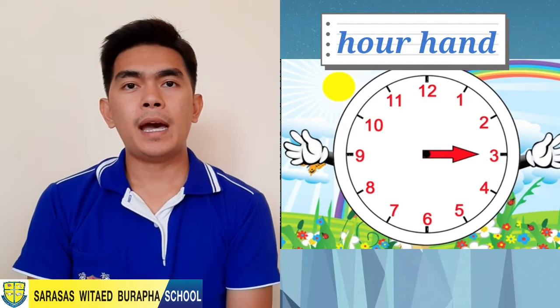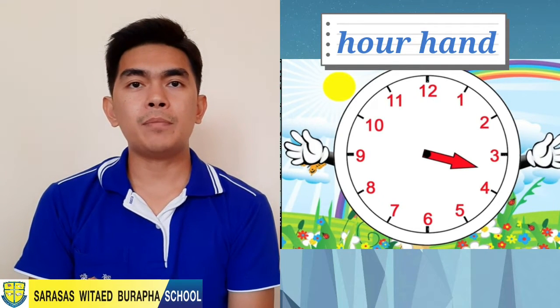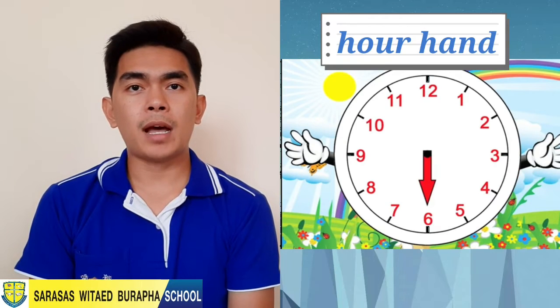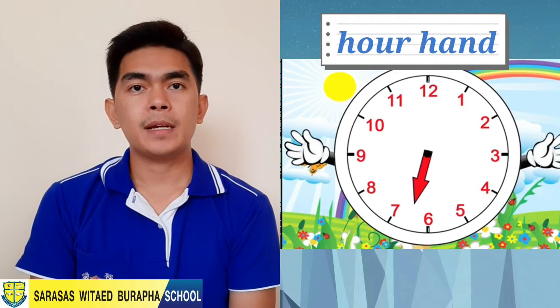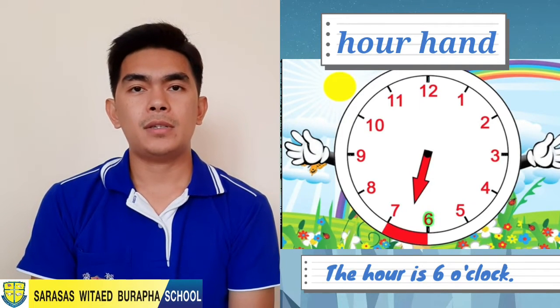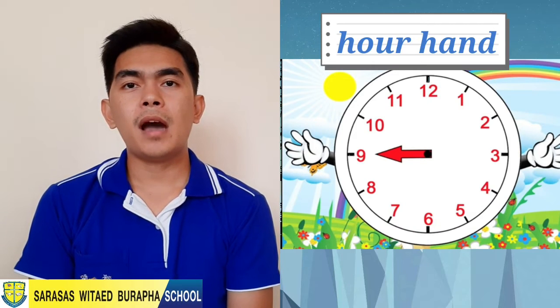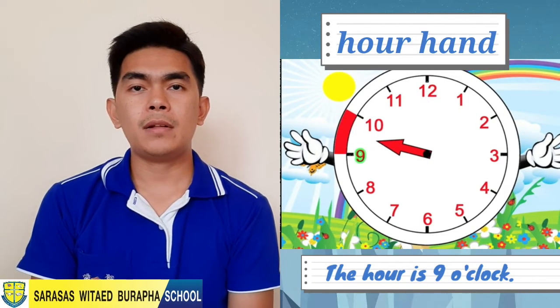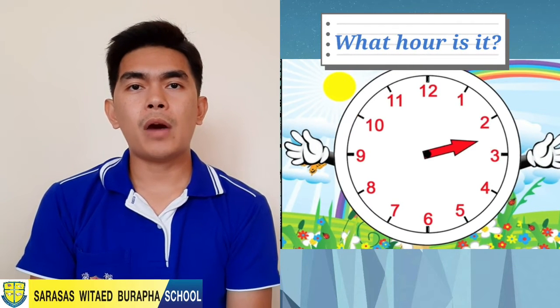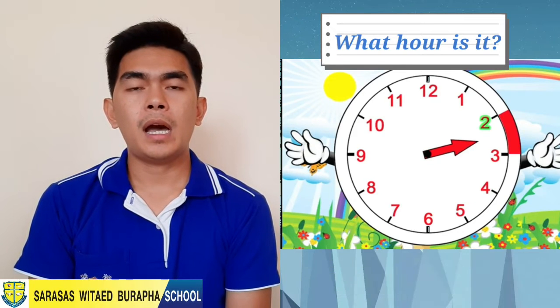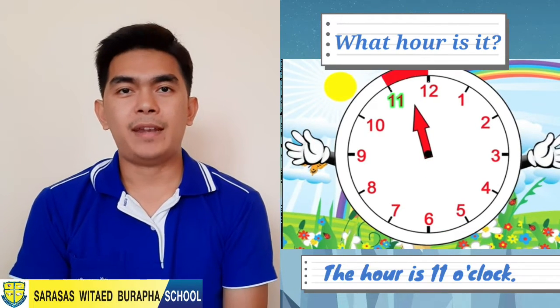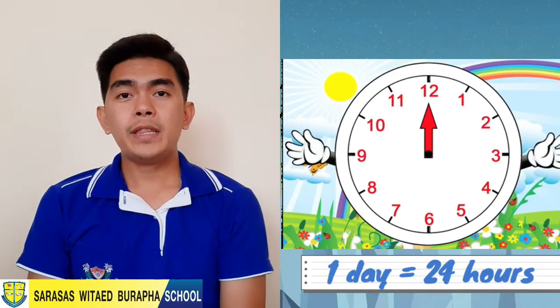Now it's three o'clock. The hour hand has passed three, but it's still not pointing to the next hour, so we are still talking about three o'clock. Now it's six o'clock — the hour hand has passed six but still not reached the next hour. Same with nine o'clock. Now, what hour are we talking about? Two o'clock. How about now? Five o'clock. And now? Eleven. Good, you've got it!